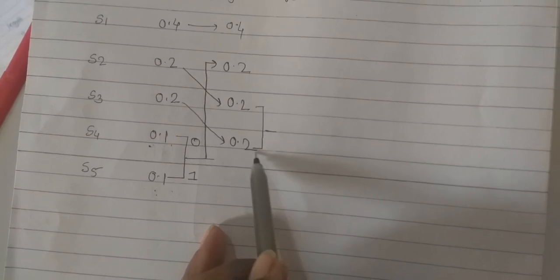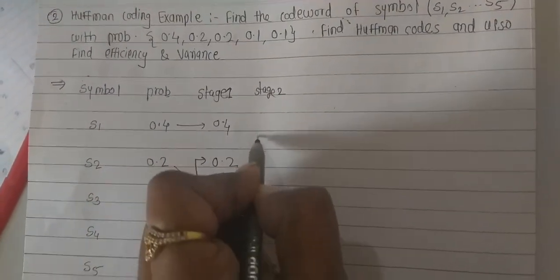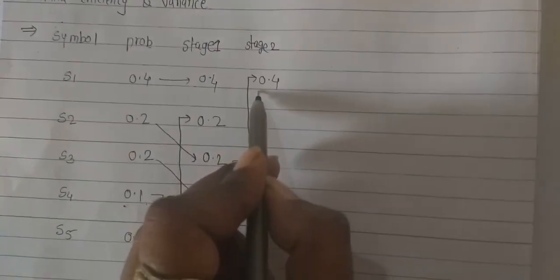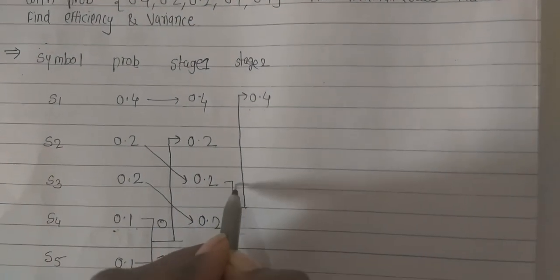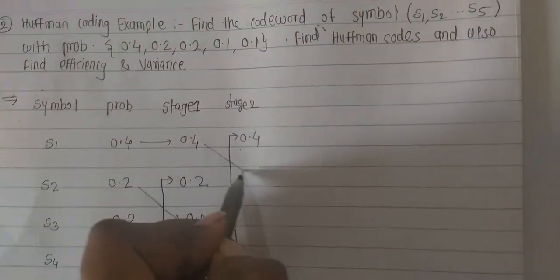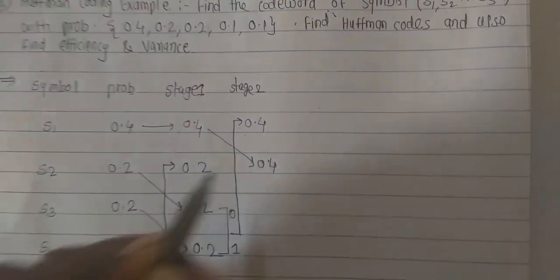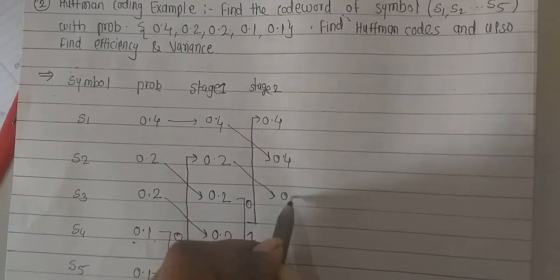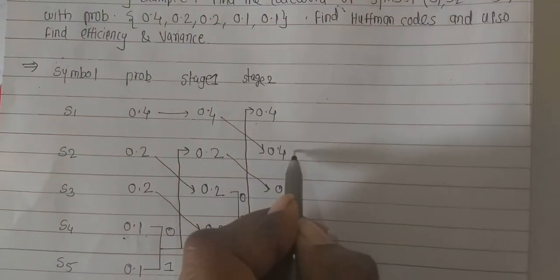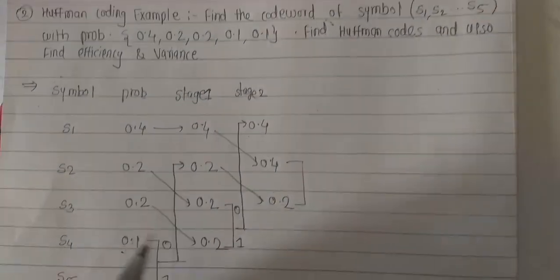In stage 2, combine the last two probabilities again. 0.2 plus 0.2 equals 0.4. Place it at the highest priority. Assign symbol 0 to the first and 1 to the second. So 0.4 is placed here and 0.2 is placed accordingly.